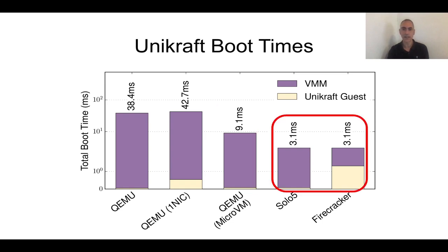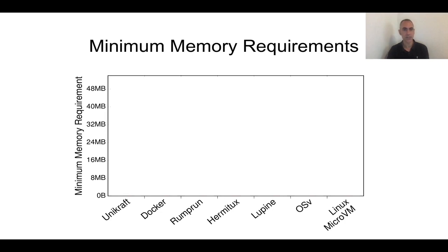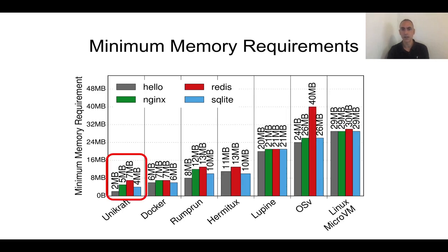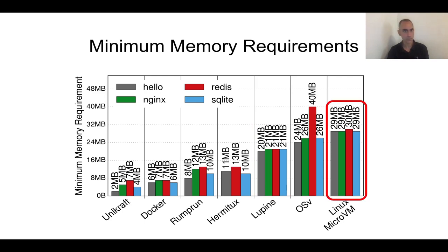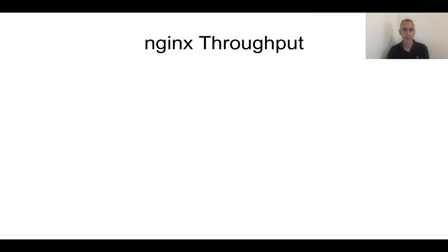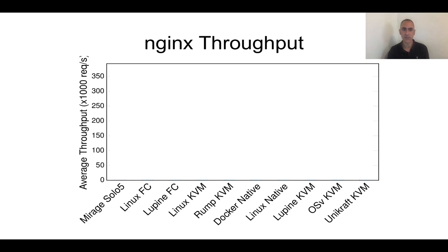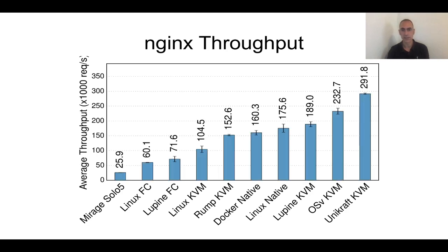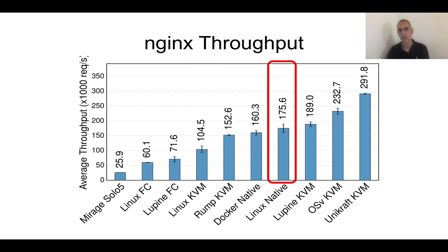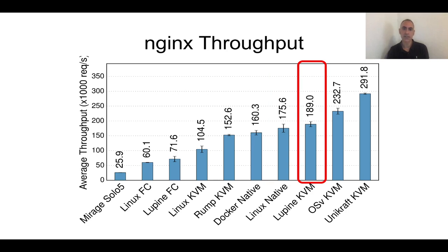In terms of minimum memory requirements, comparing against Linux and other projects for Nginx, Redis, and SQLite: Unikraft takes anywhere from 2 to 7 megabytes. Lupine, the Linux-based unikernel, takes about 20 megabytes, and Linux Alpine about 30 megabytes. For Nginx throughput, comparing against Linux and other projects and measuring thousands of requests per second: Linux on KVM is about 100,000; Linux native is about 175,000; Lupine is 190,000; and Unikraft reaches 290,000 requests per second.